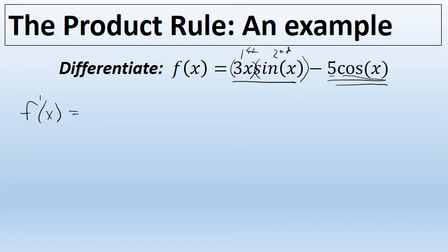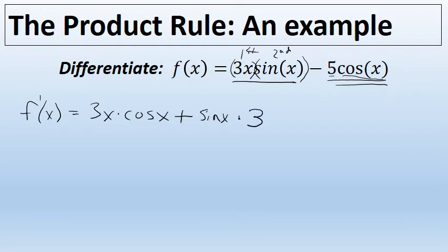So in this case the first factor unchanged is 3x, and the derivative of the second factor sine of x is cosine of x. That is the first factor times the derivative of the second factor. Then we'll add to that the second factor unchanged, sine of x, times the derivative of the first factor, which is 3. These two terms represent the derivative of 3x times the sine of x.